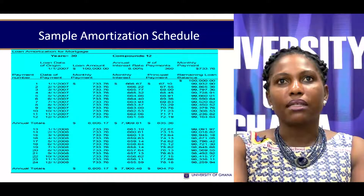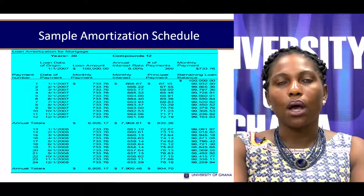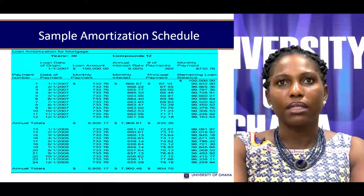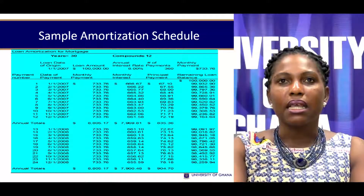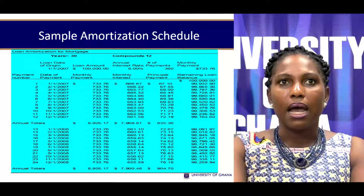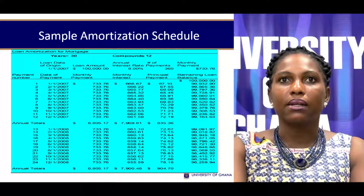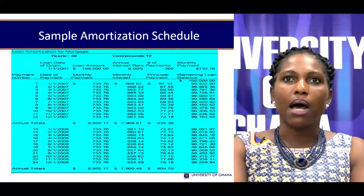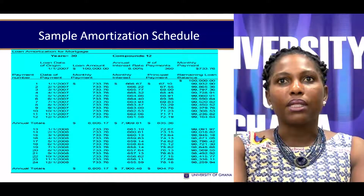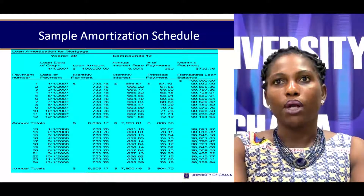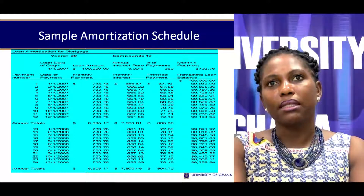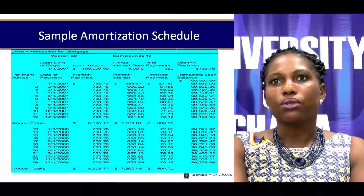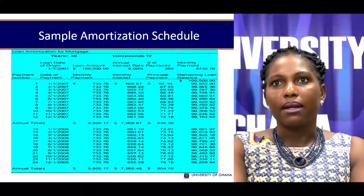Because the interest is 8% per annum divided by 12, we get the monthly interest accrued on the loan of $100,000. That computes to $666.67. Of the $733.76 paid to the bank, $666.67 goes to pay interest and the remaining $67.09 goes toward the principal. That means at the end of the first month, the loan balance reduces by only $67, bringing the remaining balance to $99,932.